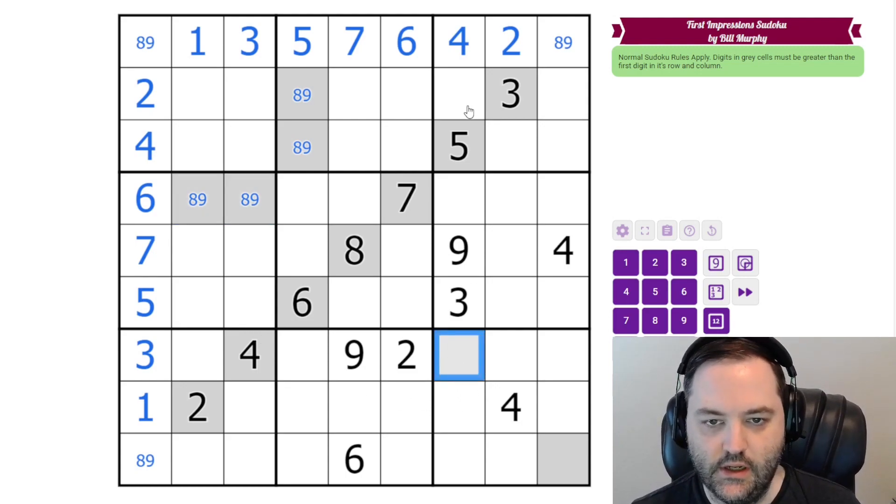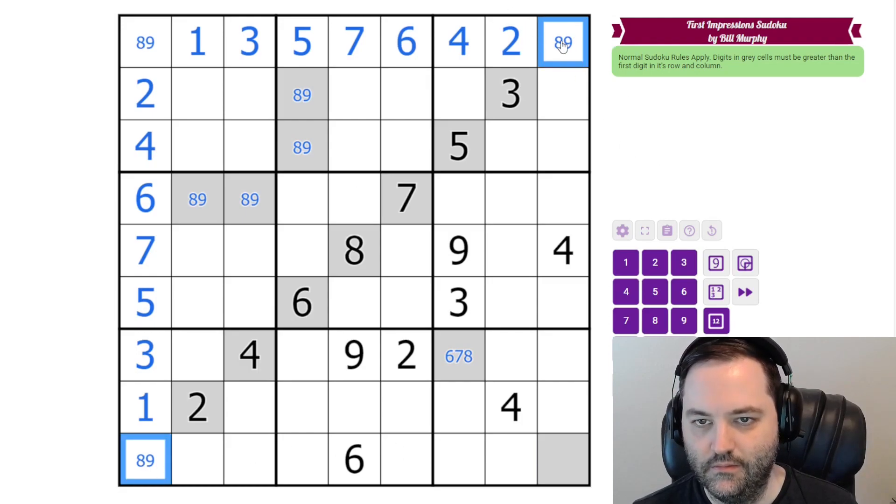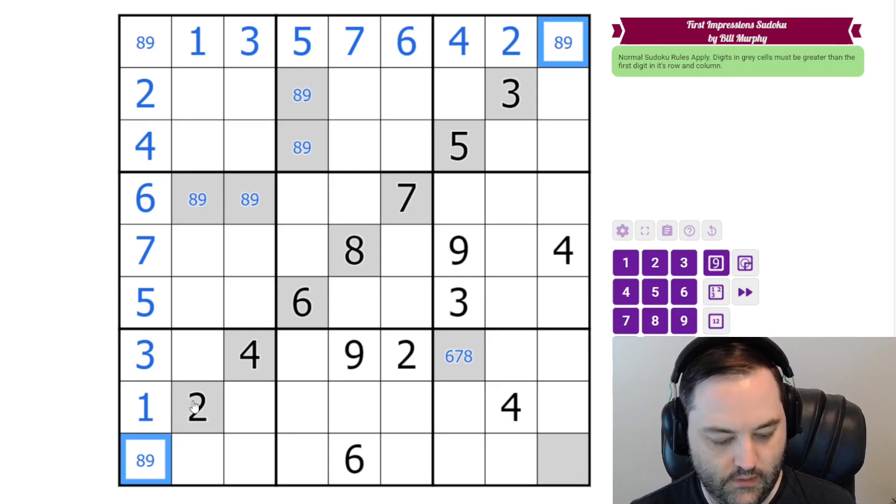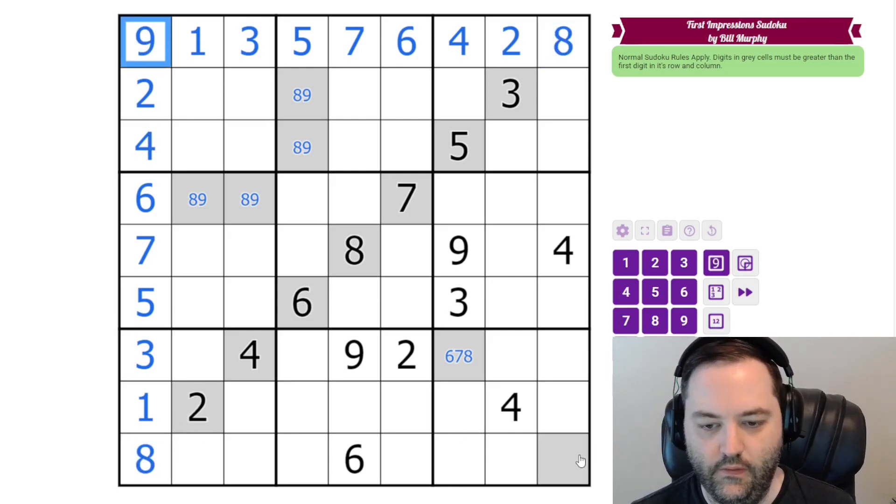This digit has to be bigger than 4, and 3, but 4 is bigger. It can't be 5 or 9, so it is 6, 7, 8. And this cell has to be bigger than these. Well, this has to be bigger. These can't be 9, so that just gives us 8s and a 9 there.